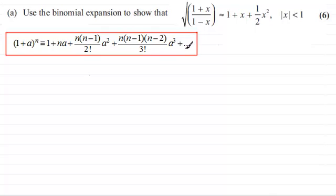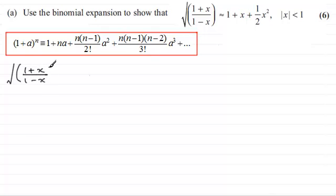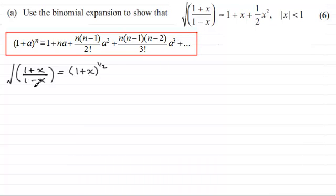In this example, let's take the square root of the fraction first and work on that. We've got the square root of (1 + x) / (1 − x). This is the same as taking the square root of the top and bottom separately: (1 + x)^(1/2) multiplied by (1 − x)^(−1/2), bringing the denominator up to the top as a negative power.